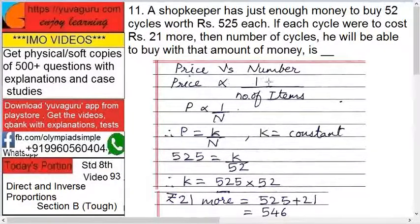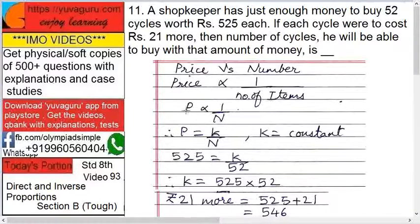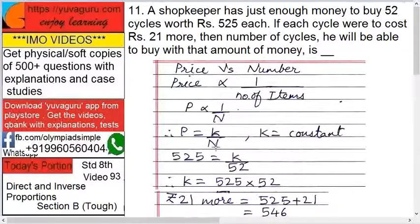Price is inversely proportional to the number of items. If price is more, the number of items would be less. So P is inversely proportional to n, which gives us P equals K upon n.